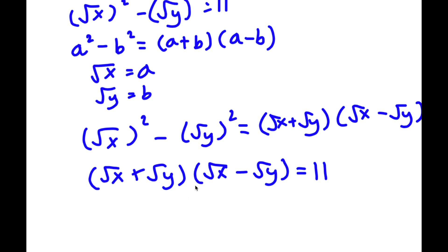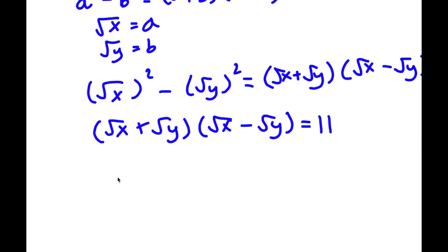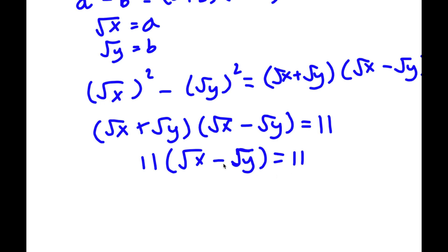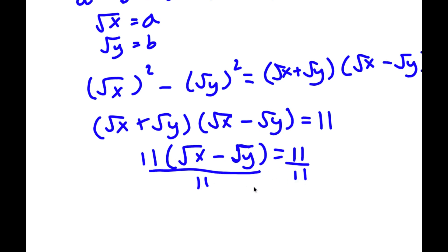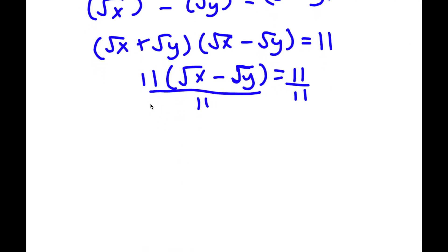So now we have the square root of x plus the square root of y, times the square root of x minus the square root of y, is equal to 11. Remember, our second equation was the square root of x plus the square root of y equals 11. So right here we have the square root of x plus the square root of y, and I'm going to substitute in 11 for that. So I have 11 times the square root of x minus the square root of y equals 11. Dividing both sides by 11, I get the square root of x minus the square root of y is equal to 1.